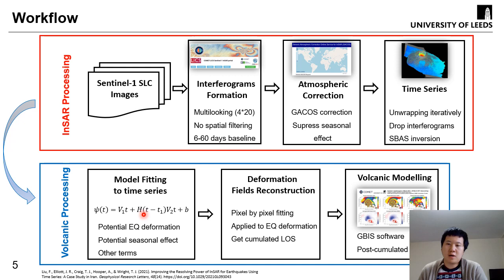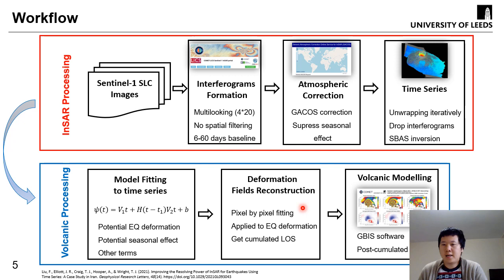We use a similar approach as applied in Iran earthquake studies to improve the co-seismic deformation. We fit the initial time series with two different linear terms — pre and post the earthquake event time — with a constant offset. There is potential co-seismic deformation introduced by the earthquake and also a topographic signal effect, but here we simply use two linear deformation terms because the co-seismic deformation is very weak at this far distance. We then fit pixel by pixel, reconstruct the deformation field, and use this reconstructed deformation field to do the volcanic modeling using the GBis software to estimate the post-seismic cumulative deformation.